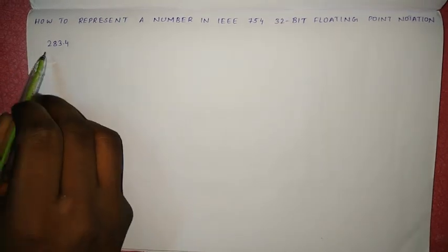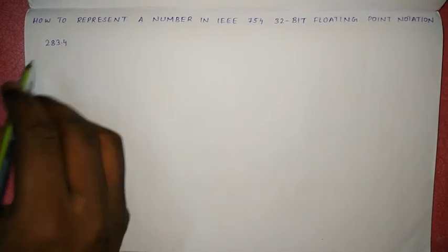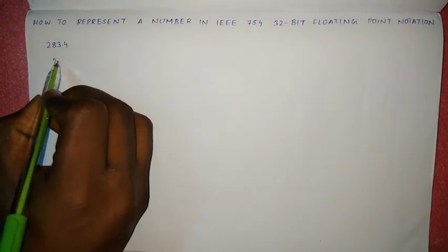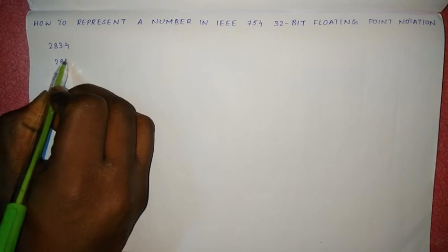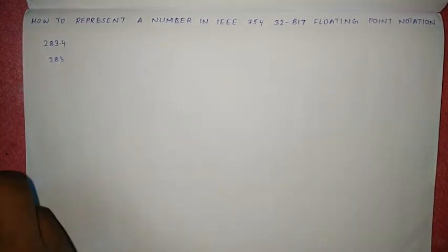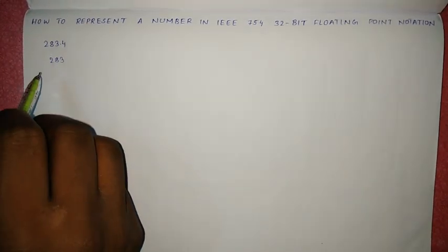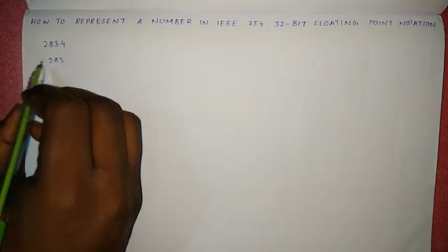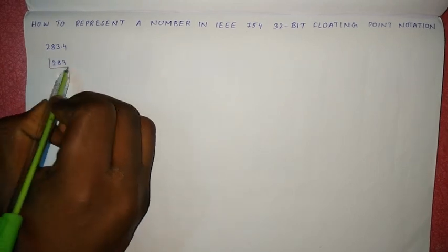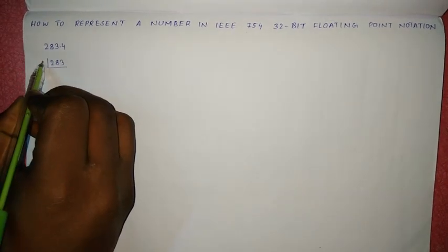Let us consider the number 283.4. First, take 283 and convert this number into binary form by repeatedly dividing by 2.